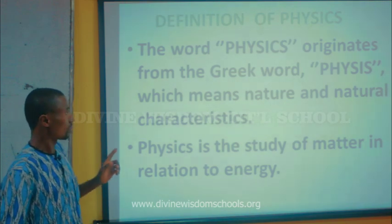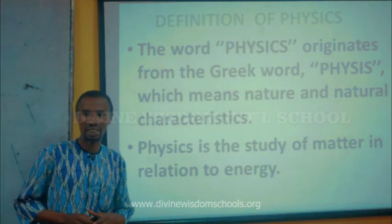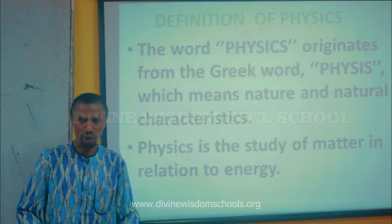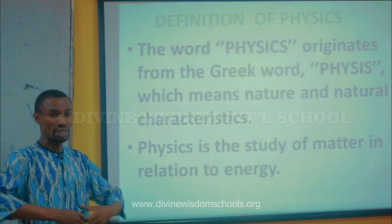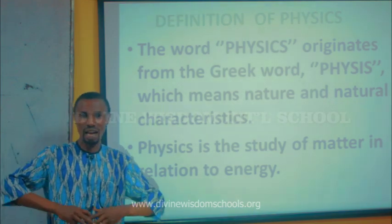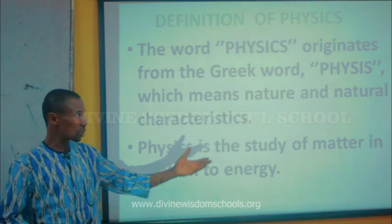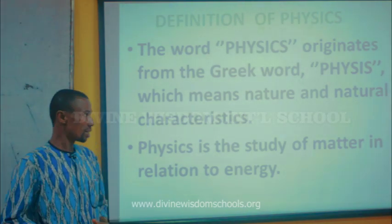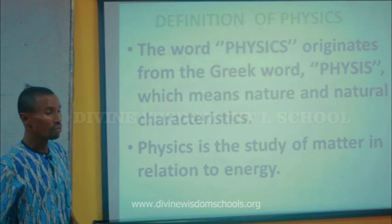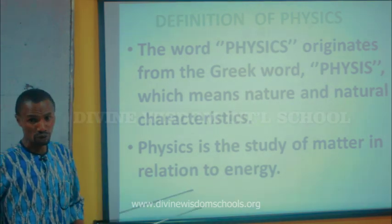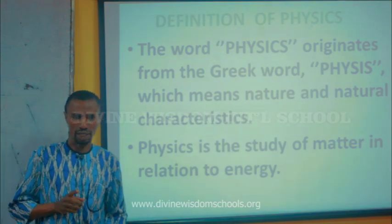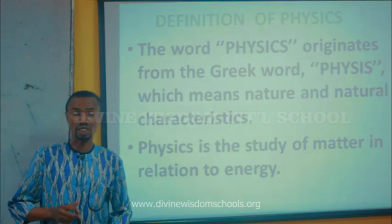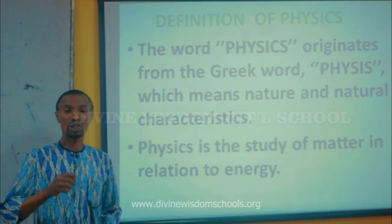The word physics originates from the Greek word called 'physis', which simply means nature or natural environment. Nature means your environment — you grew up from childhood to the level you are today, and you see things around your environment. There are some things that have existed in nature just on their own; that's what we mean by natural environment. The word physics simply means the study of matter in relation to energy. Another definition is: physics can be defined as the study of matter and the energy associated with matter.